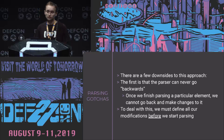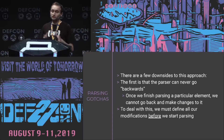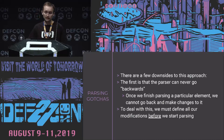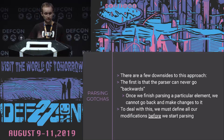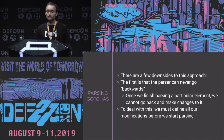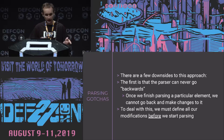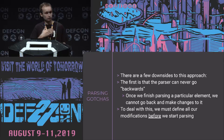There are some downsides to this approach. The first is that the parser can never go backwards. Once we've finished parsing past a particular element, we can't go back and make changes — we have to do everything to that element the second we see it. So we have to define all of our modifications before we start parsing. There's no moment where we can parse the entire binary and then say 'okay, I want to change this' — we have to define everything up front.